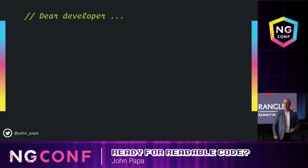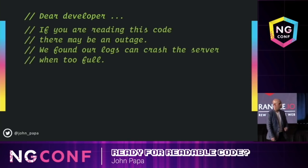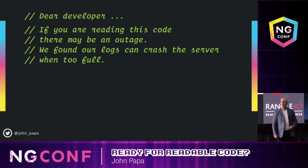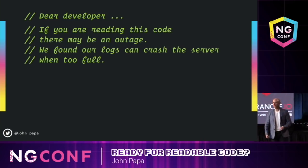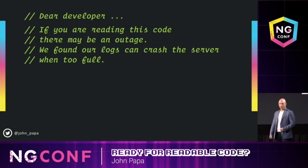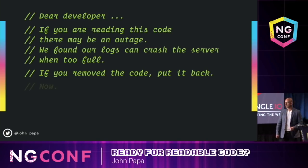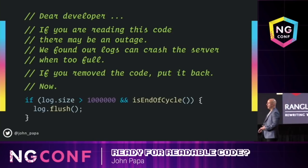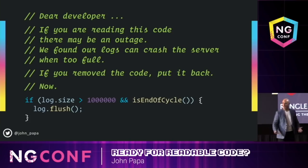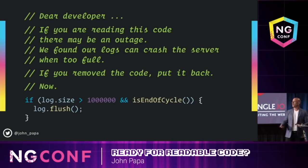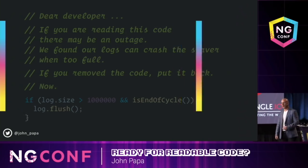We see through the Git history of our application that something was removed from GitHub. 'Dear developer, we found this line of code. If you're reading this, there may be an outage. We found our logs in — they can crash the server when they're too full. If you removed the code, put it back. Now.' So you see something like this and go, okay, great. We found the problem. We can put the line of code back. But why did this happen? Could we have prevented it? Could we have reduced the amount of time to get to this point in the first place?